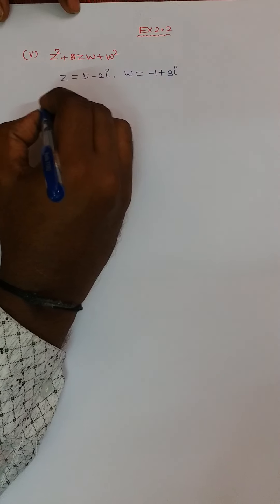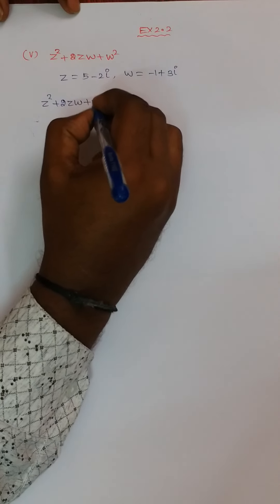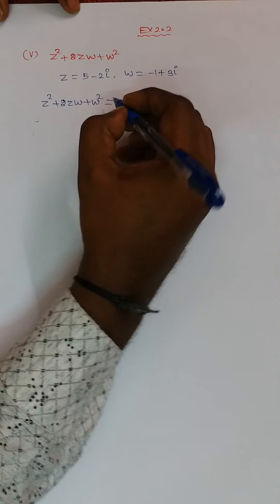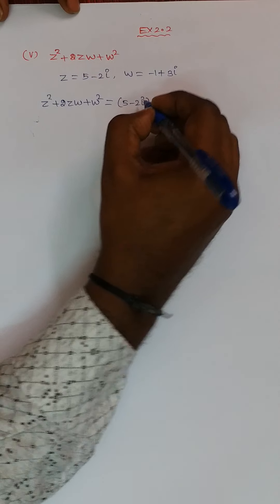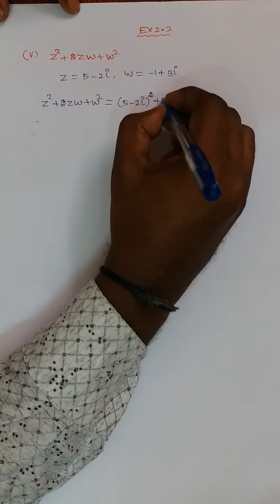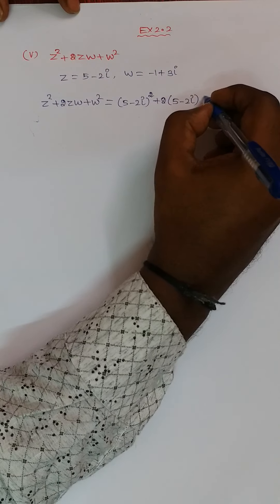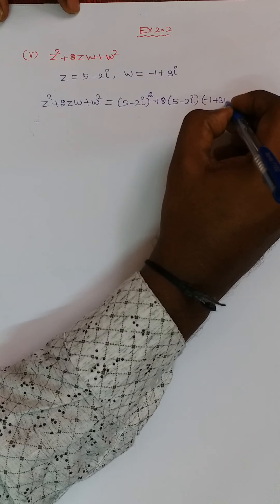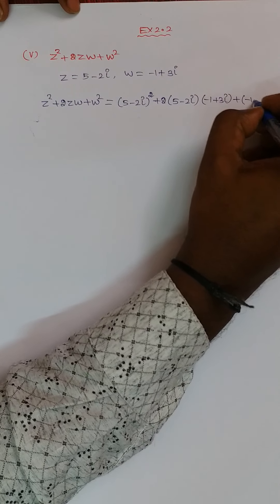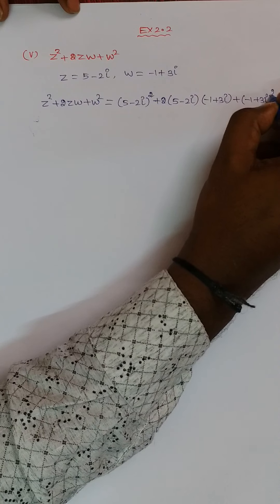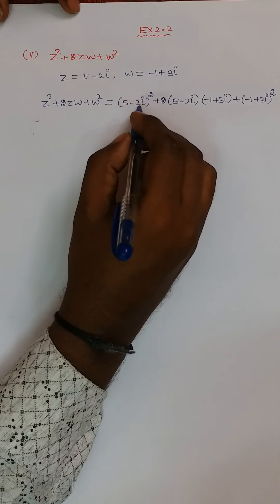So Z² + 2ZW + W² is equal to: Z value (5 minus 2i) the whole square, plus 2 into Z value (5 minus 2i) and W value (minus 1 plus 3i), plus W value (minus 1 plus 3i) the whole square. Now I am going to expand this.